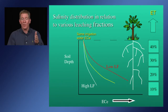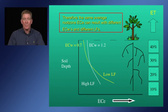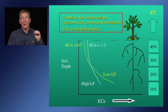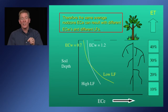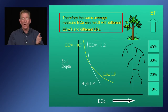To illustrate: two different irrigation water salinities — one at ECw of 0.7 and another at 1.2 — can result in the same average root zone salinity under steady-state conditions if the lower-salinity water has a lower leaching fraction than the higher-salinity water. In that scenario, both irrigation waters would produce the same yield potential for a particular crop.